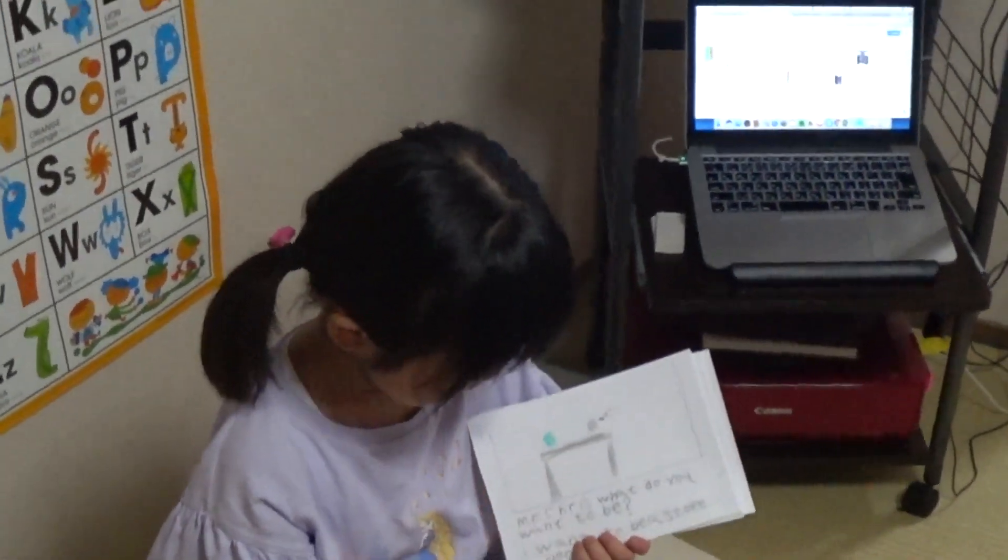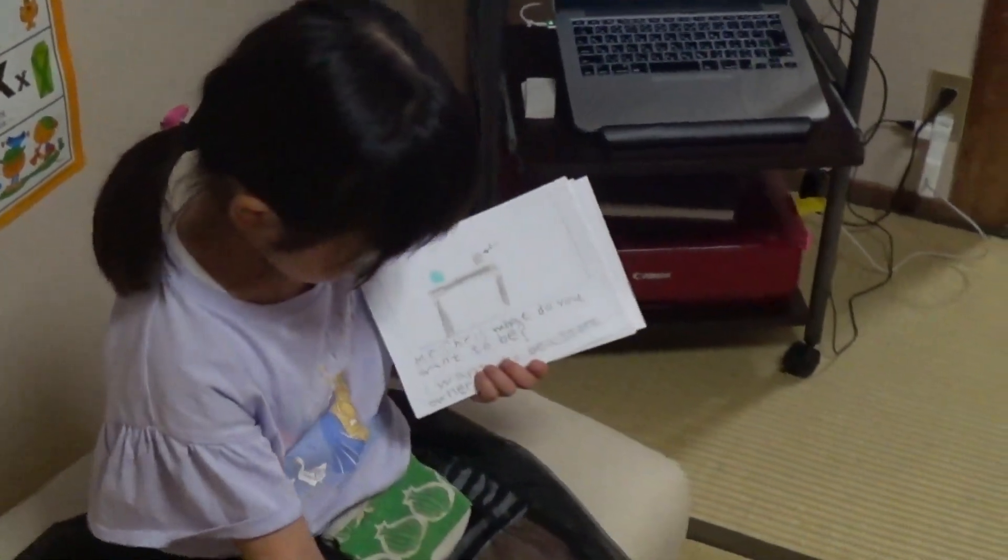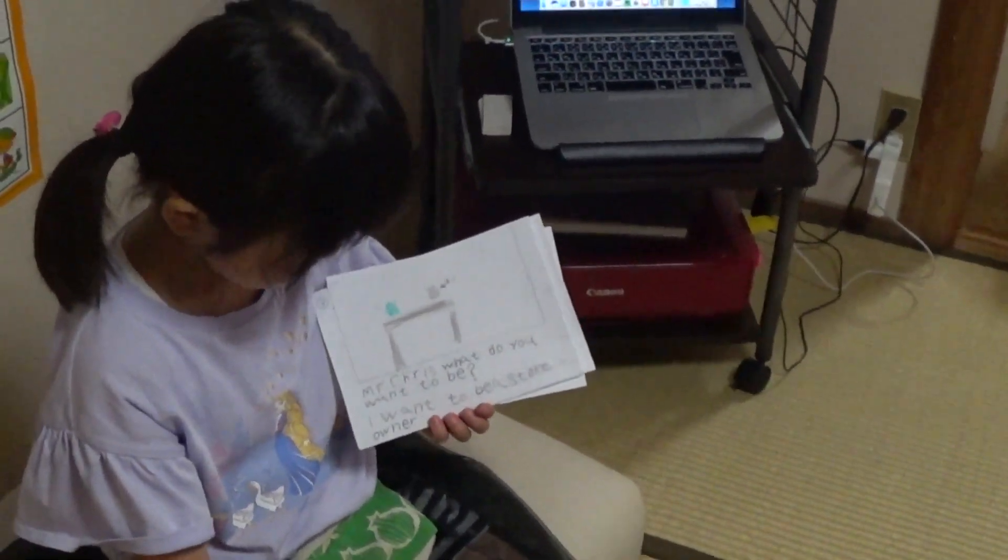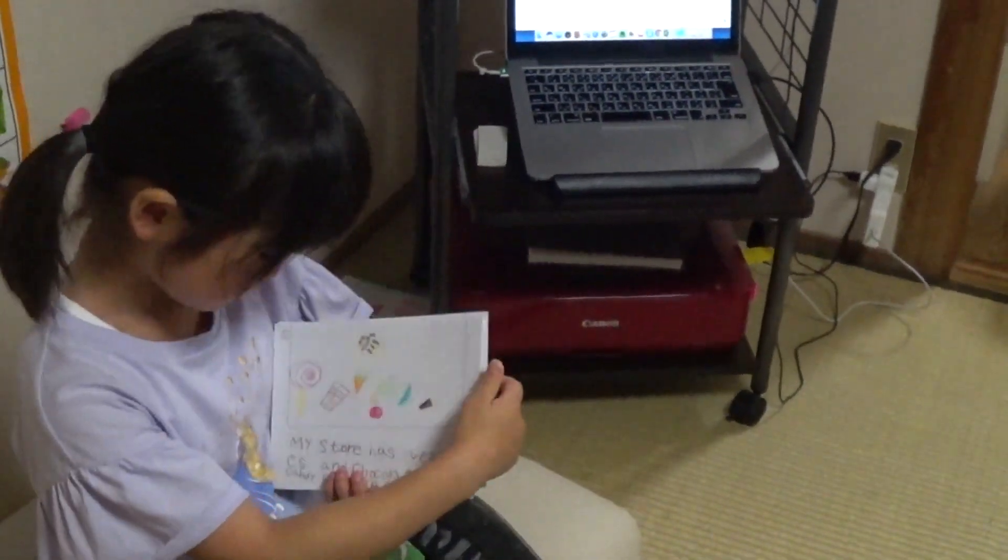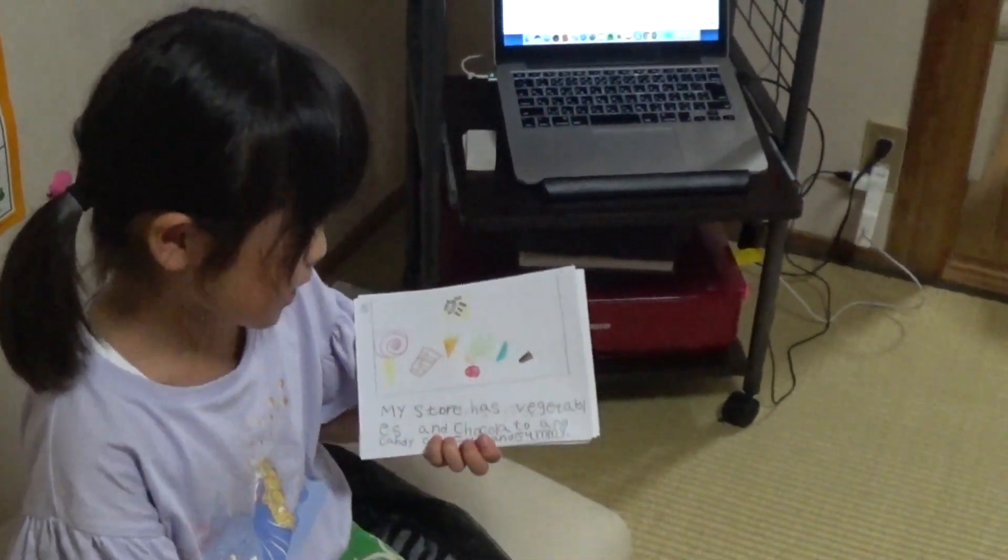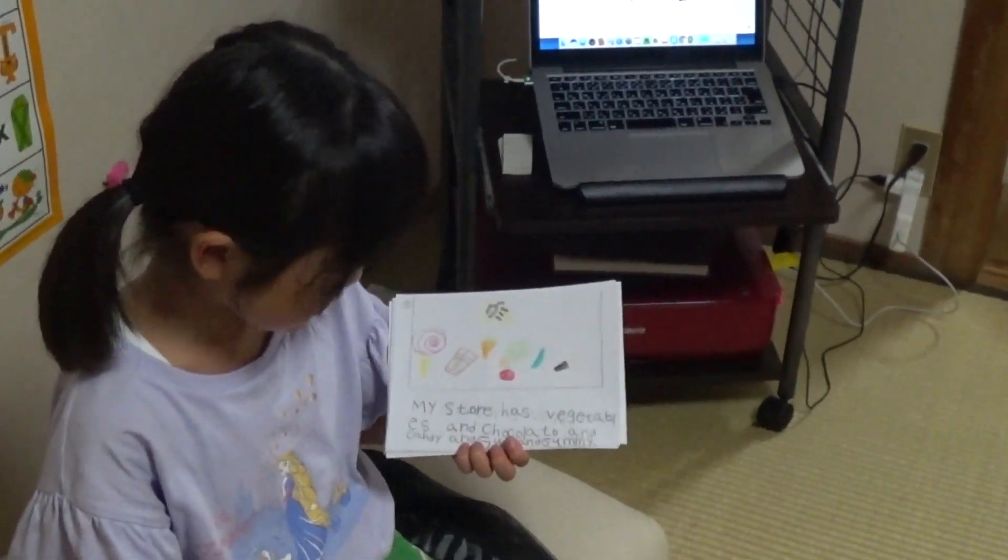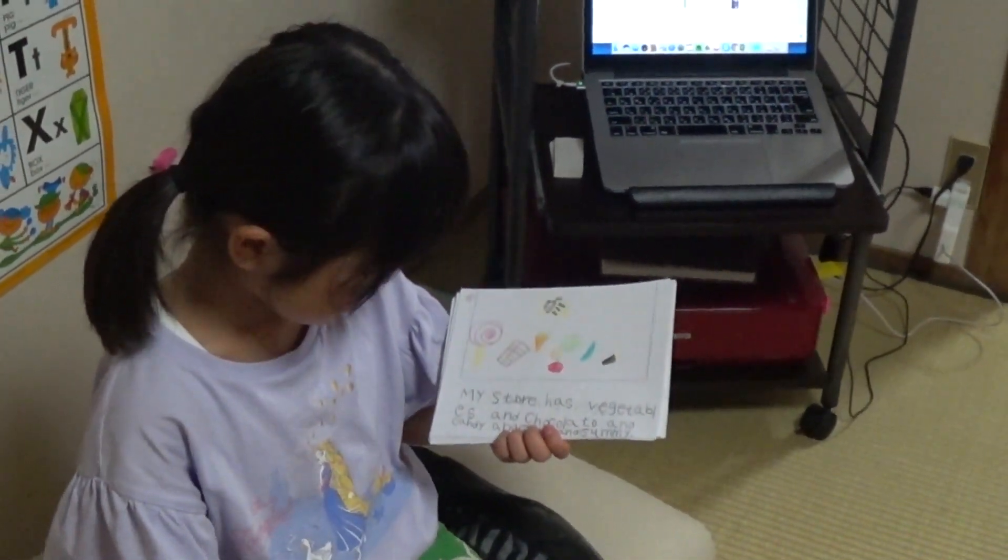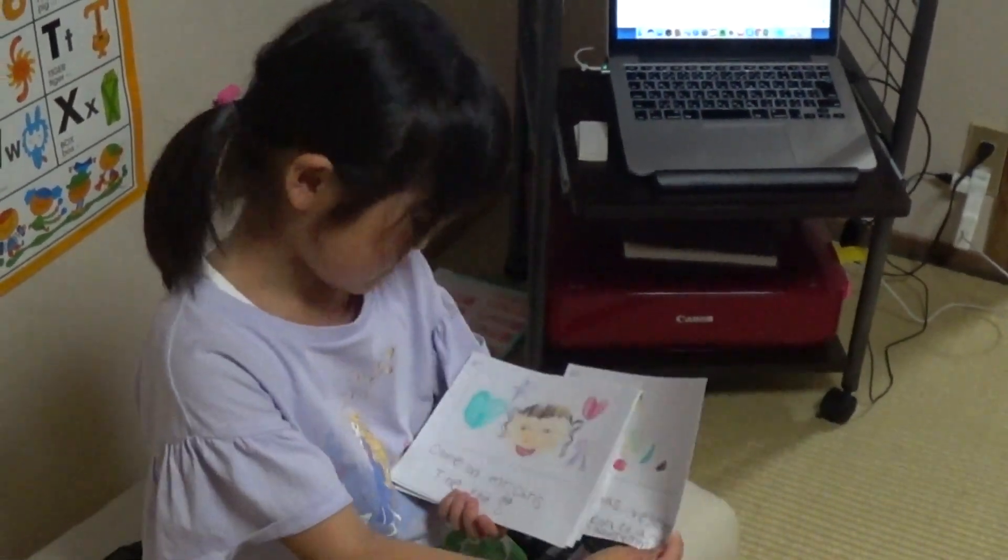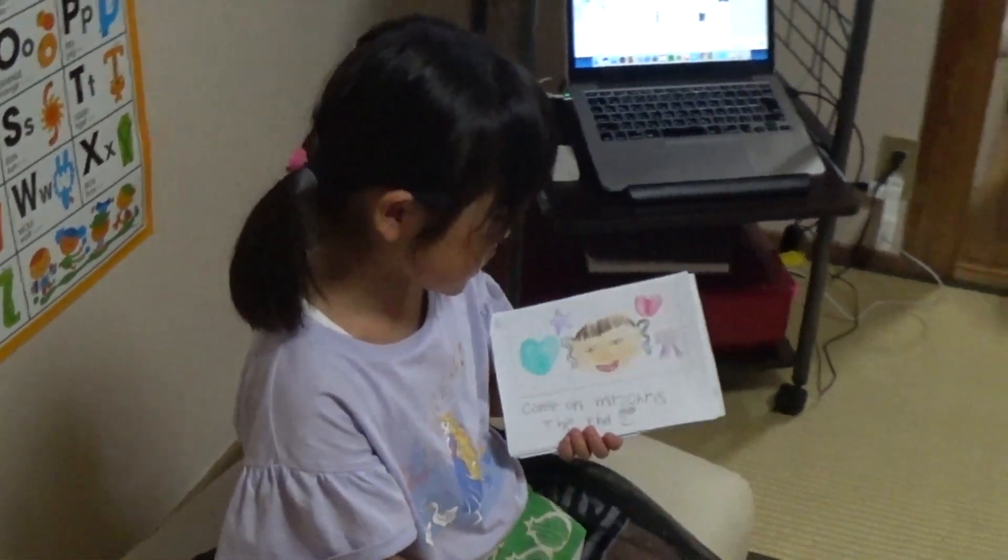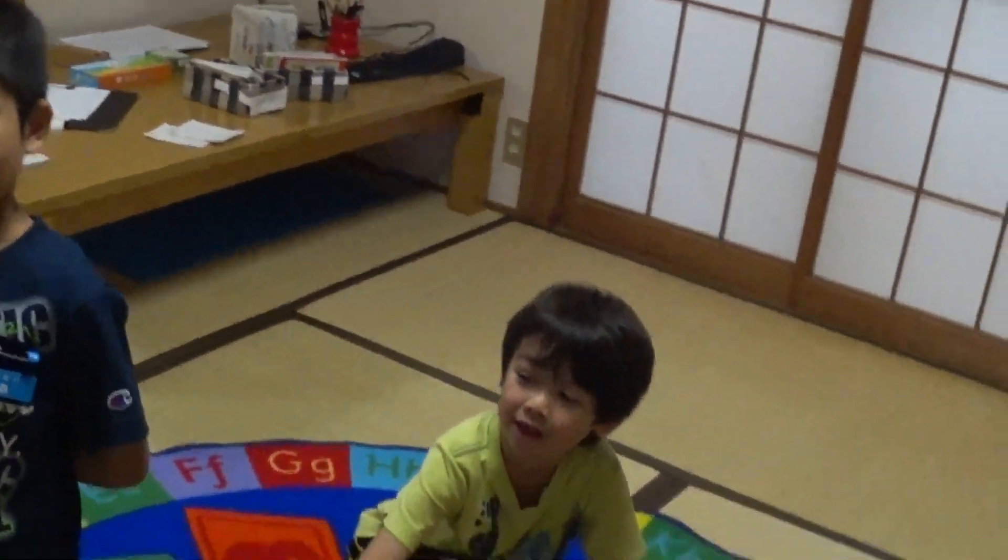Mr. Chris, what do you want to be? I want to be a store owner. My store has vegetables and chocolate and candy and gum and gummi. Come on Mr. Chris. Woohoo!